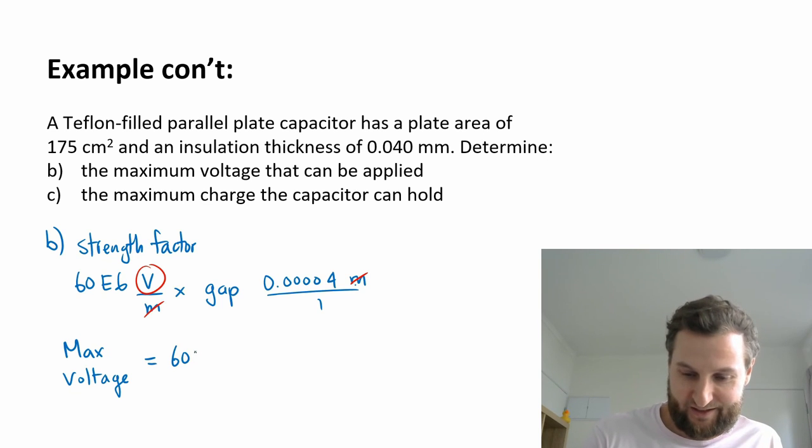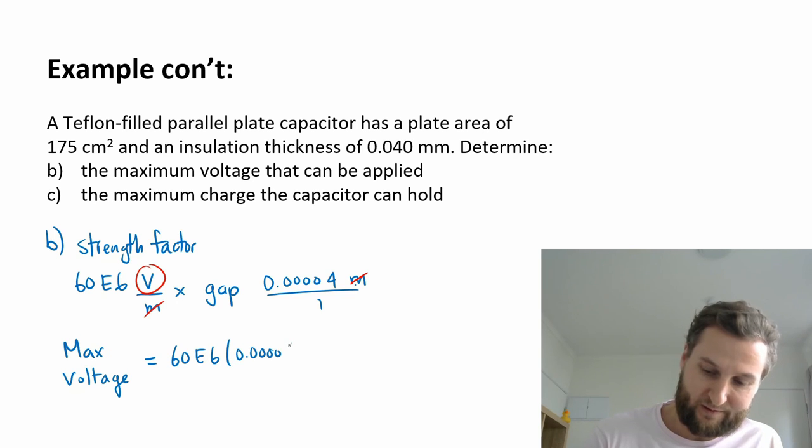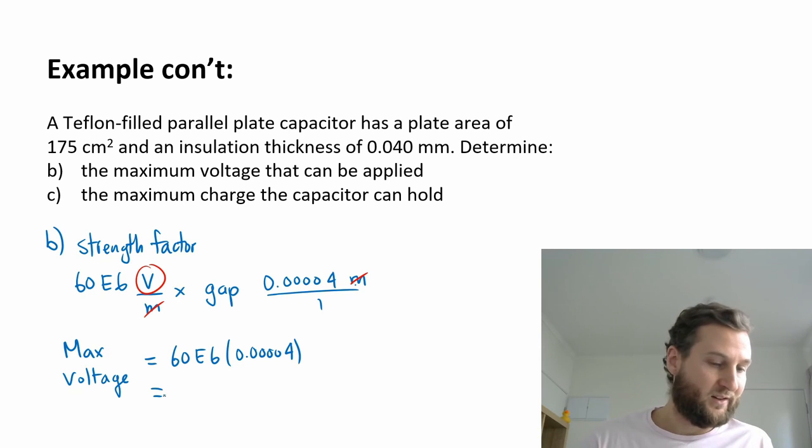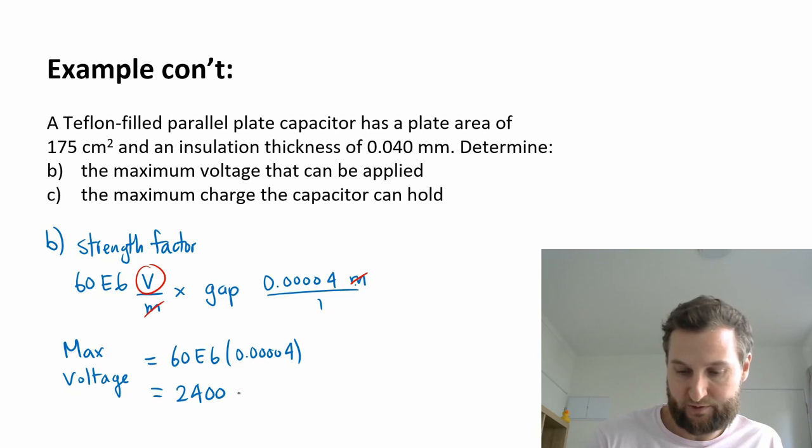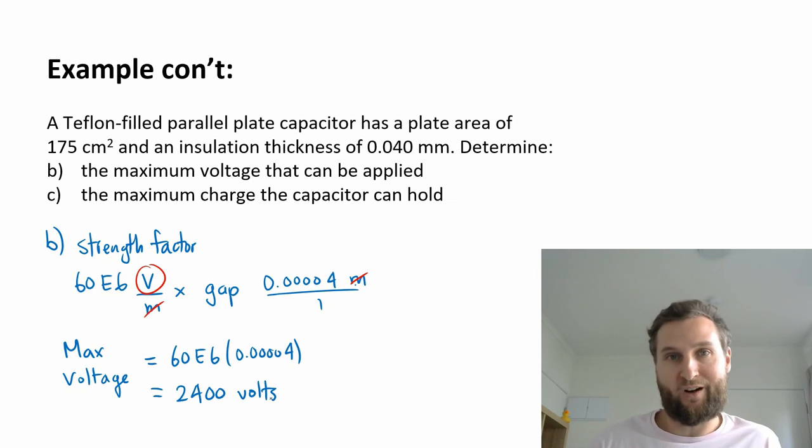The max voltage equals 60 million times 0.00004 meters. So 60 E6 times—I'm mixing notation here, but I'm all right with that. This comes out to 2,400 volts. So if more than 2,400 volts are applied, then presumably the capacitor is going to break or that dielectric is not going to hold.